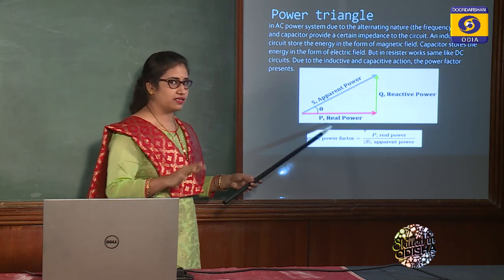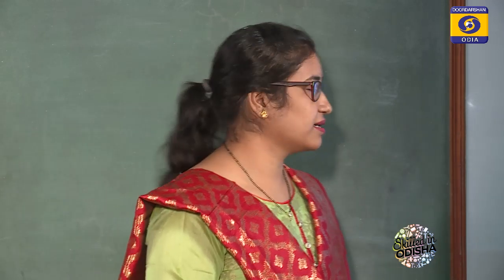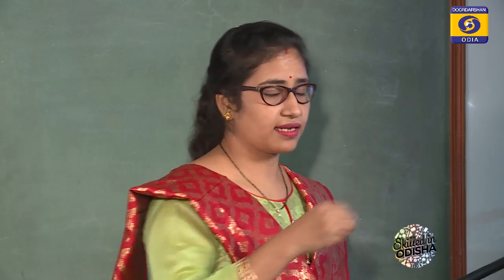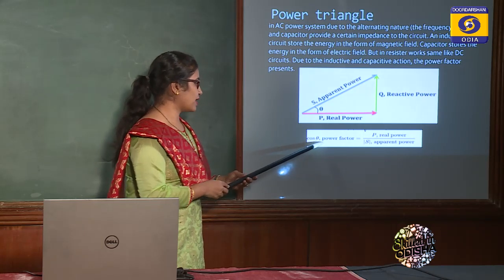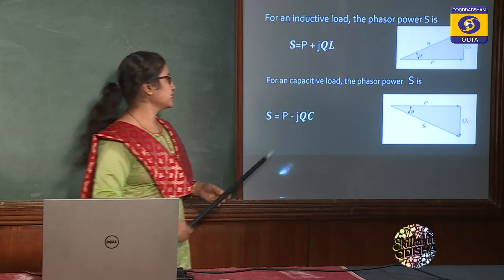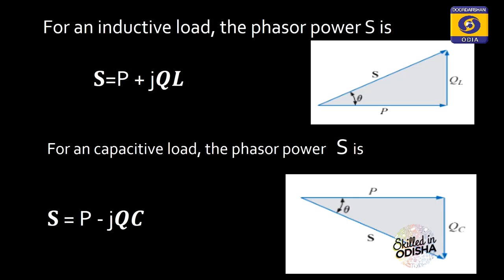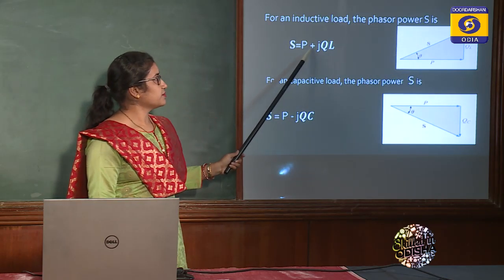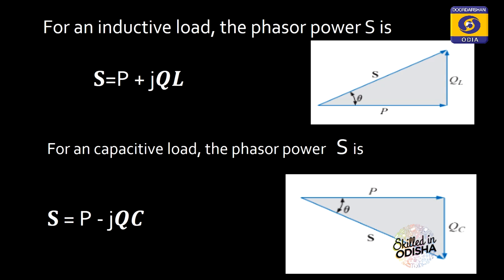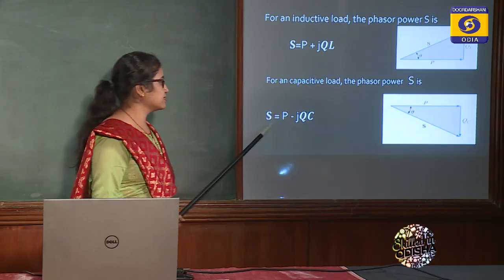We are interested in power factor. As seen earlier, power factor is cos theta — the cosine of the angle between voltage and current. Looking at the power triangle, that same theta angle is the power angle. Power factor, defined as cos theta, is the ratio of real power to apparent power. For an inductive load, the complex power is S = P + jQL, and for a pure capacitive load, S = P − jQC.